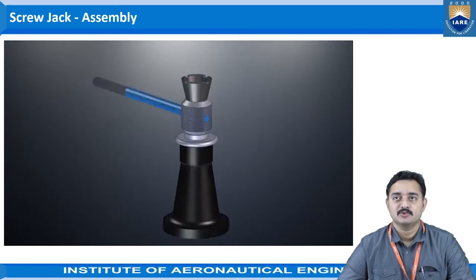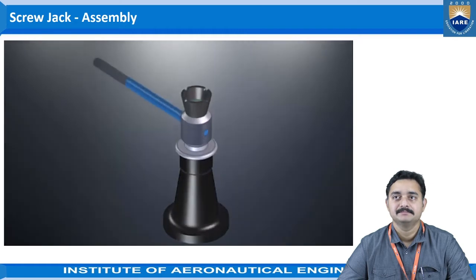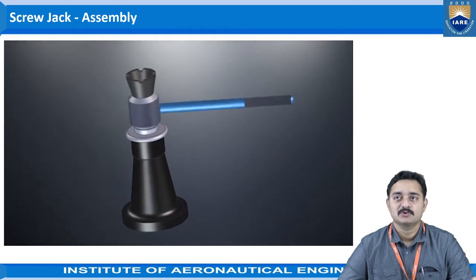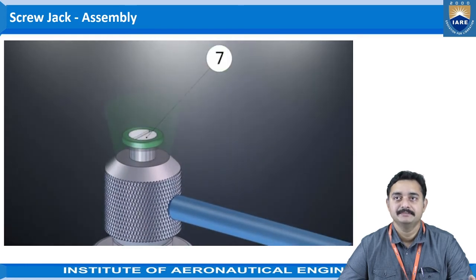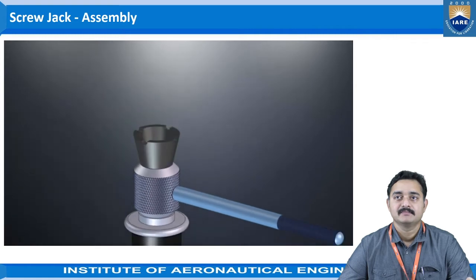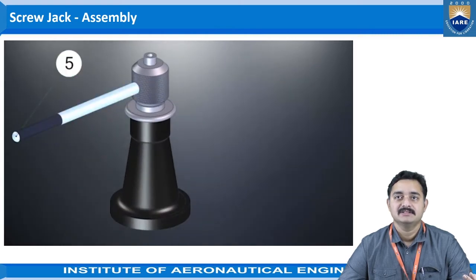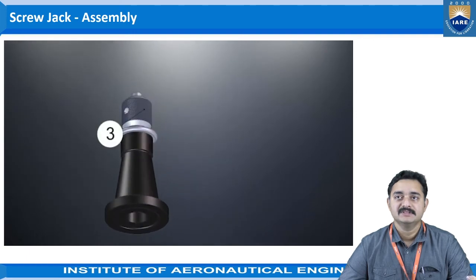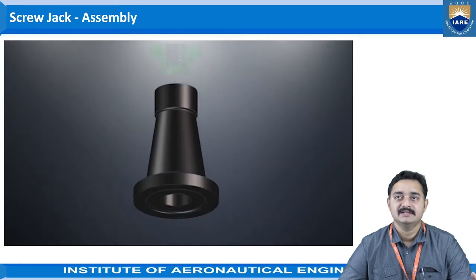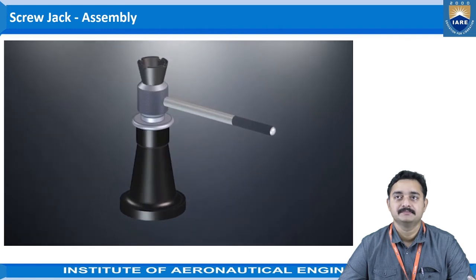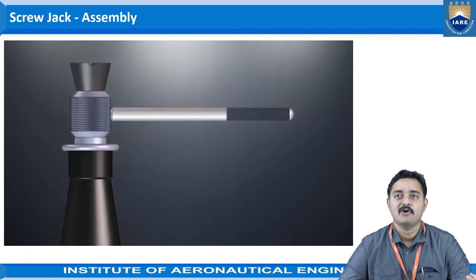Now let us see the assembly of the screw jack — how the parts will be assembled. This is the total screw jack. The individual parts are: the screw head, the lead screw, the washer, the support or load header, the shaft or arm, the screw with external threads, and the nut which forms the body. In this way the parts are assembled to form a complete screw jack.